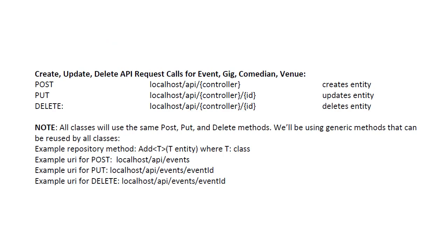Of course, it wouldn't be a very good API if we did not allow creating, updating, and deleting records in our database. So we will allow create, update, and delete for events, gigs, comedians, and venues. Since these methods will be very similar, we'll utilize generic methods — simply one method to create, one to put, and one to delete an entity. This method will be able to process any of the four classes that we pass into it.